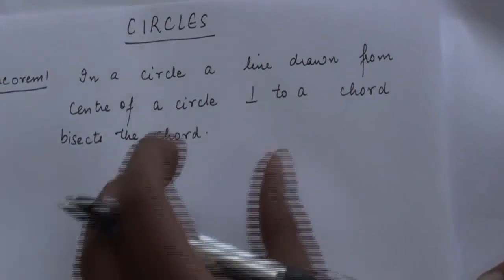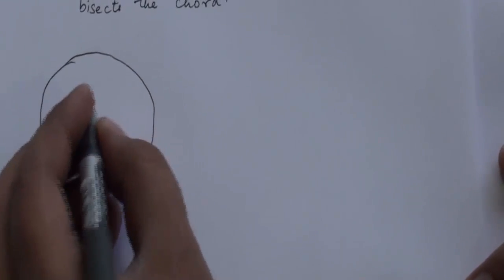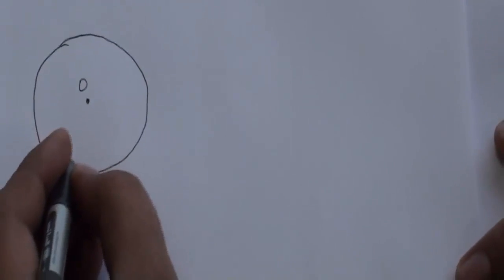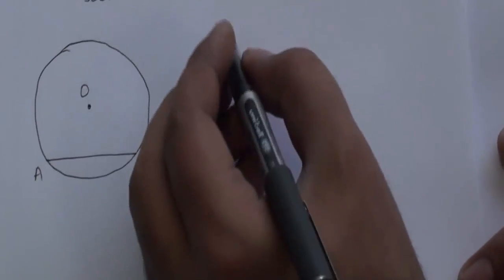Now what is the proof of this theorem? We draw a circle. This is the center O.